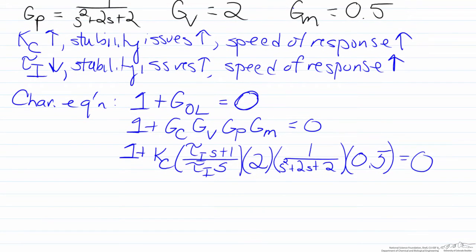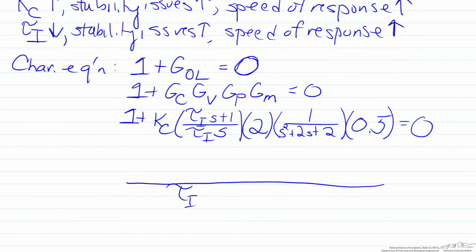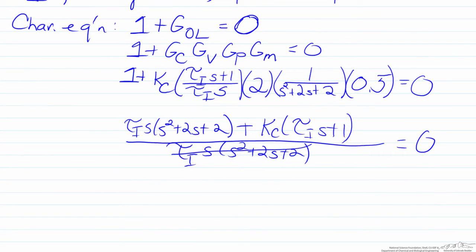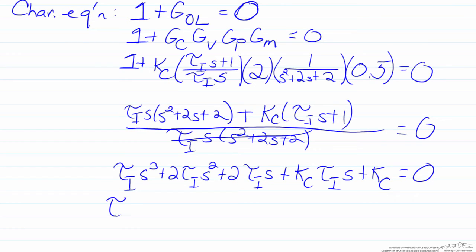In order to carry out this analysis we have to find the least common denominator, so that will be tau I s multiplied by s squared plus two s plus two. Our first term, the one, needs to be multiplied by both of those terms, and the second term already has both of those. So all we have here is Kc times two times a half times one, so that will be just Kc times tau I s plus one. We will get rid of the denominator and then factor out. So when we factor out, we'll have tau I s cubed plus two tau I s squared plus two tau I s plus Kc times tau I s plus Kc equals zero. If we group the s terms together to clean this up we'll have our characteristic equation.